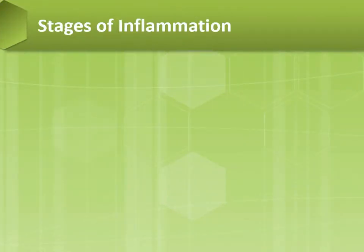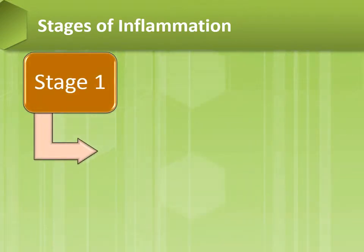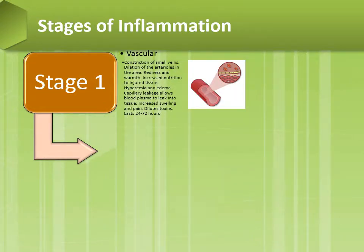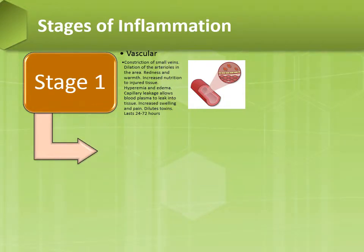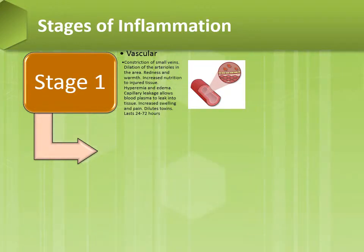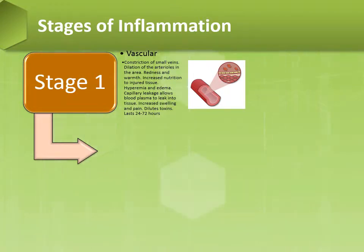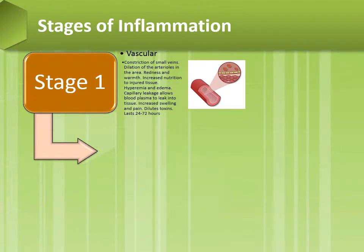Stage 1 is the vascular stage. There is constriction of small veins, dilation of the arterioles in the area, and then redness and warmth occur. There is increased nutrition to injured tissue, and then hyperemia and edema can occur. There will be capillary leakage allowing blood plasma to leak into the tissue, causing increased swelling and pain. There may be dilute toxins, and this stage lasts 24 to 72 hours.